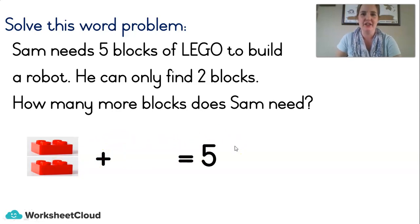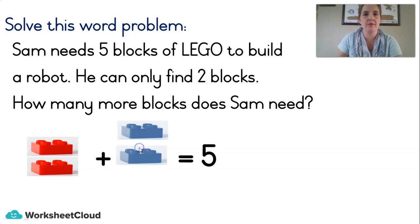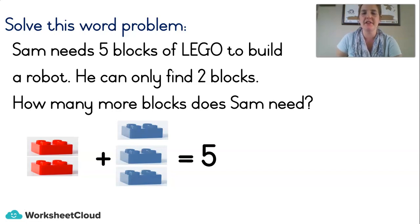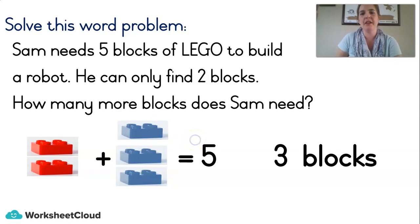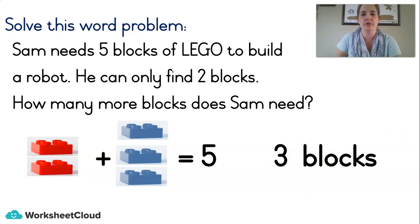So we've got two plus we don't know how many more, and that's going to give Sam his five blocks: two plus what equals five. You can hold up your hand — one, two, three, four, five. How many blocks did we add? Three, because two plus three equals five. So Sam needs three more blocks. Remember, it was a word problem so we must have a word in the answer — not just three, but three blocks.